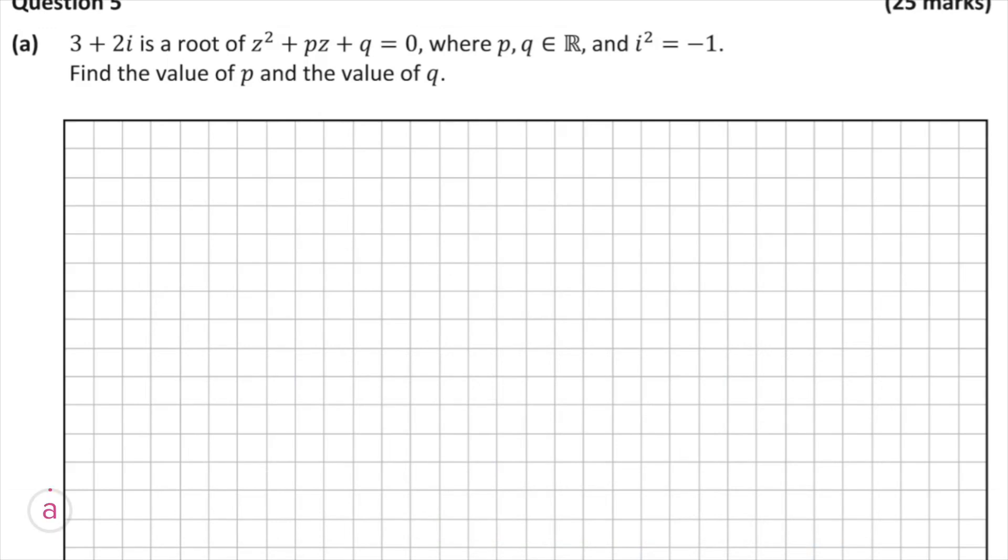Okay, so here's our question. We're told that 3 plus 2i is a root of this quadratic. Our p and q are real numbers. We've got to find the value of p and the value of q. So basically we're given two unknowns in our quadratic, the coefficient of z to the power of 1 and also the constant.